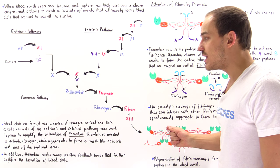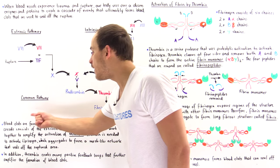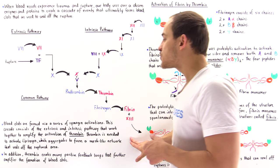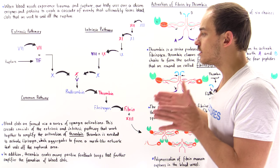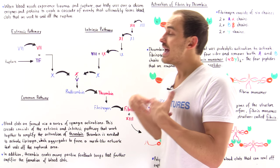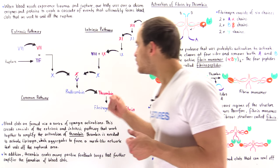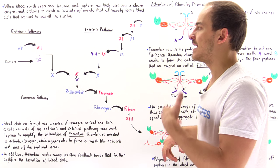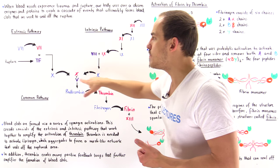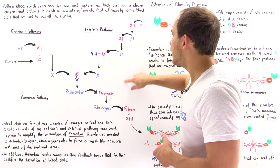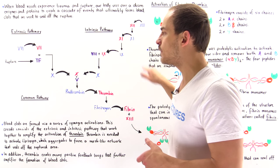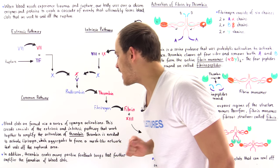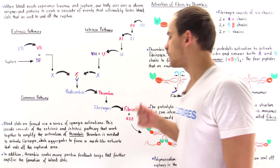Thrombin is the serum protease needed to proteolytically activate fibrinogen, which forms aggregates called fibrin molecules — a mesh-like network used to seal off the clot. Blood clots are formed via a series of zymogen activations, with the extrinsic and intrinsic pathways amplifying thrombin activation. Thrombin also creates many positive feedback loops that further activate zymogens, amplifying the formation of blood clots at the end.